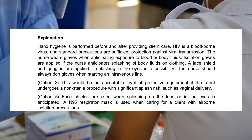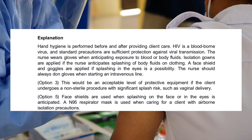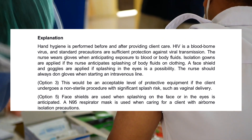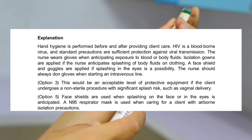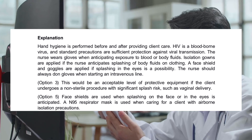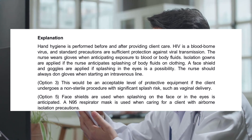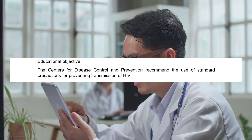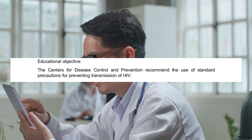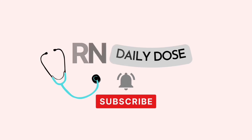Option 3: This would be an acceptable level of protective equipment if the client undergoes a non-sterile procedure with significant splash risk, such as vaginal delivery. Option 5: Face shields are used when splashing on the face or in the eyes is anticipated. An N95 respirator mask is used when caring for a client with airborne isolation precautions. Educational objective: The Centers for Disease Control and Prevention recommend the use of standard precautions for preventing transmission of HIV.